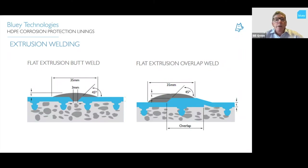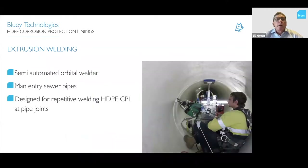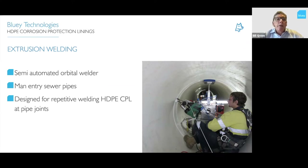There are various details for corners — external and internal — again with a maximum 3mm gap to allow heat transfer from the weld. If there's more than 3mm, you need to use a cover strip with two extrusion welds. An automated orbital extrusion welder is also available for welding HDPE CPL in concrete pipes. This machine was designed for repetitive welding of CPL at pipe joints in man-entry sewer pipes and has an automatic pressure system to apply constant pressure as it goes around the pipe circumference.